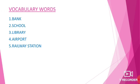Let us move to the vocabulary words. First word: bank — B-A-N-K. Second word: school — S-C-H-O-O-L. Third word: library — L-I-B-R-A-R-Y. Fourth word: airport — A-I-R-P-O-R-T. Fifth word: railway station — R-A-I-L-W-A-Y S-T-A-T-I-O-N. Please practice these vocabulary words — read aloud, see, and write them in your notebook.